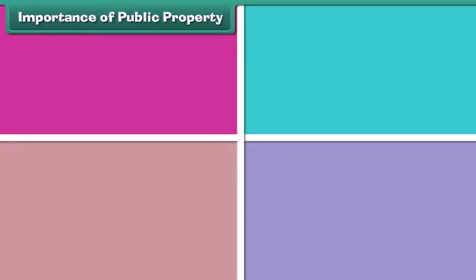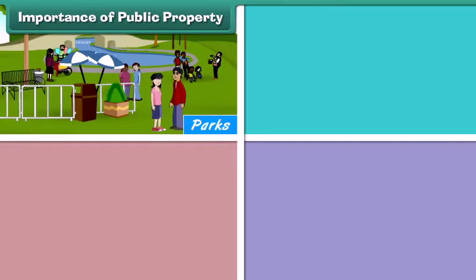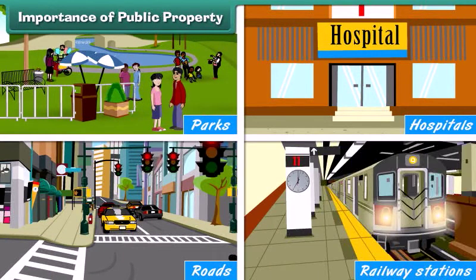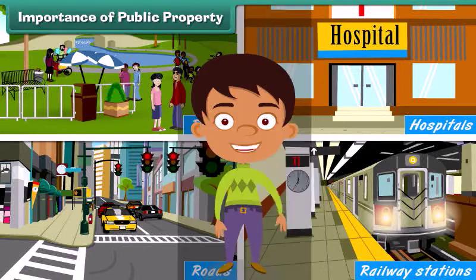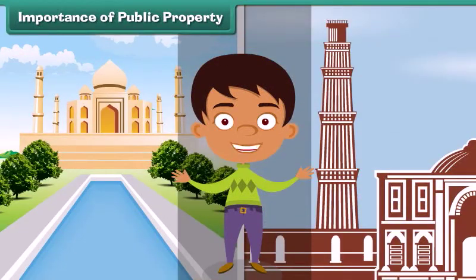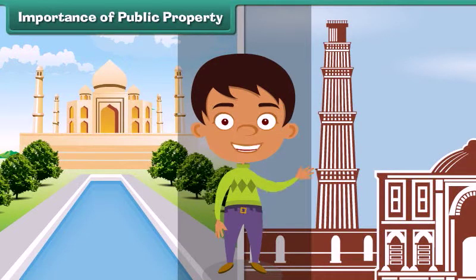Public properties like parks, hospitals, roads, and railway stations are for public welfare; they provide comfort and convenience to the public. Some public properties like historical monuments showcase the glorious history of a country. They are the pride of a nation.